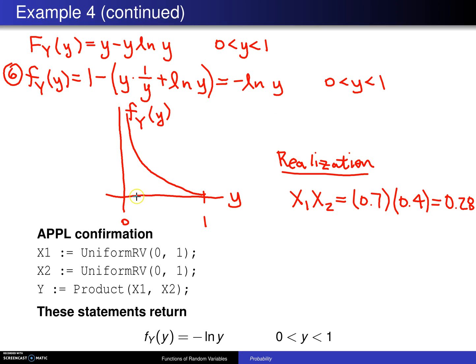APPL confirmation, very simple. X1, uniform random variable (0,1). X2, uniform(0,1). Random variable Y is equal to the product of X1 and X2. There is a product routine that is written, and those will return the probability density function as the natural log of y. So the conclusion is, if you take the product of two independent uniform(0,1)s, you get a probability density function that looks just like this.